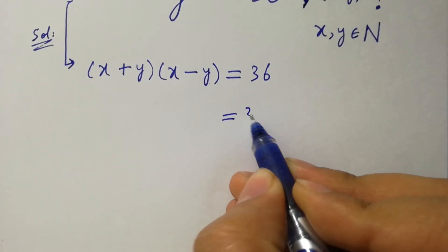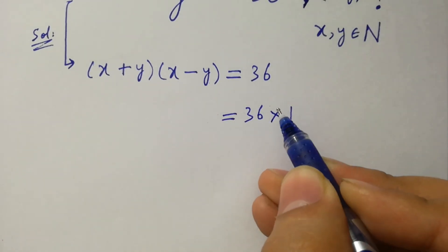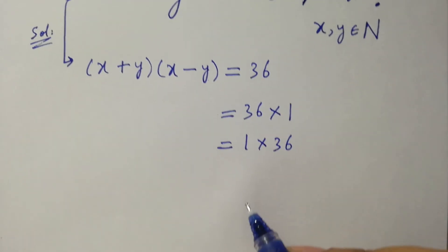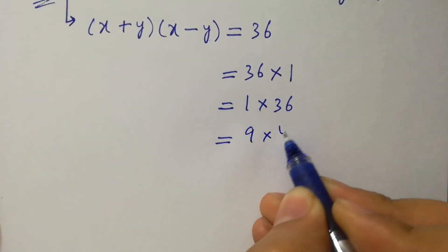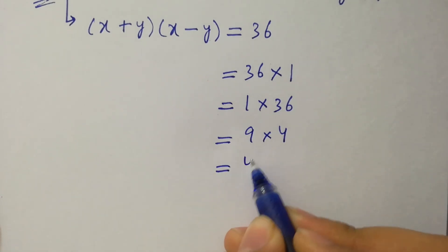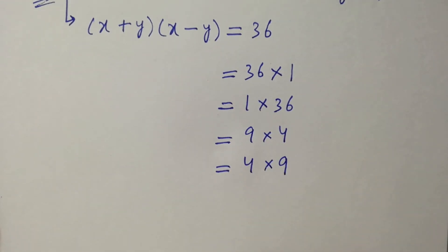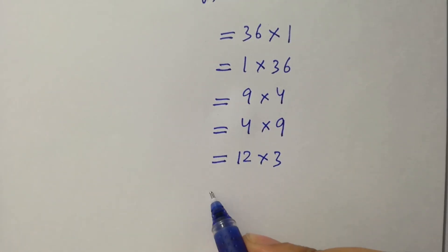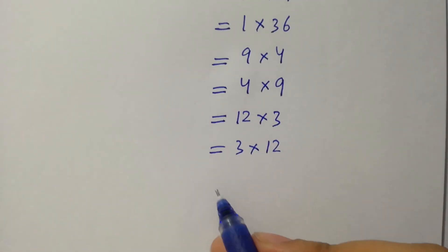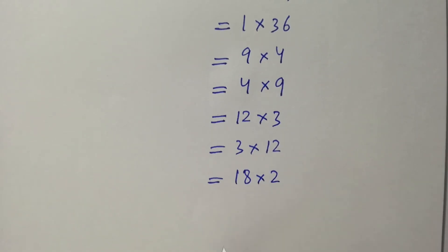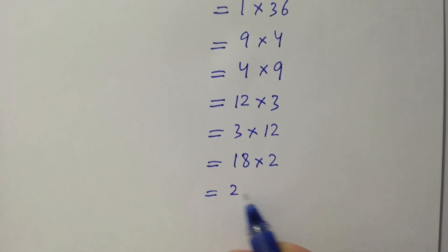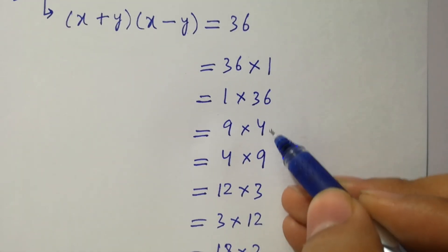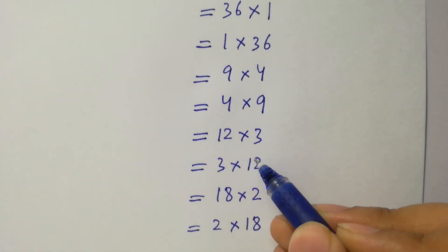Will we have choices here? 36 times 1 is 36. 1 times 36 is 36. 9 times 4 is 36. 4 times 9 is 36. 12 times 3 is 36. 3 times 12 is 36. 18 times 2 is 36 and also 2 times 18 is 36. So we have 8 choices here.